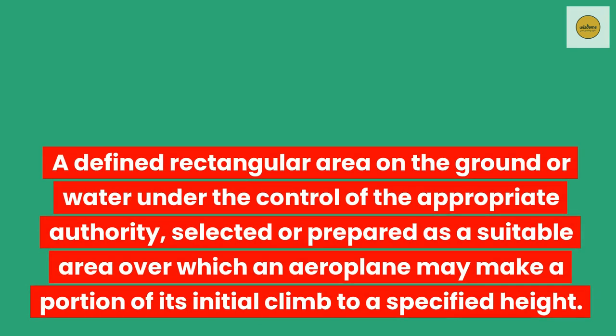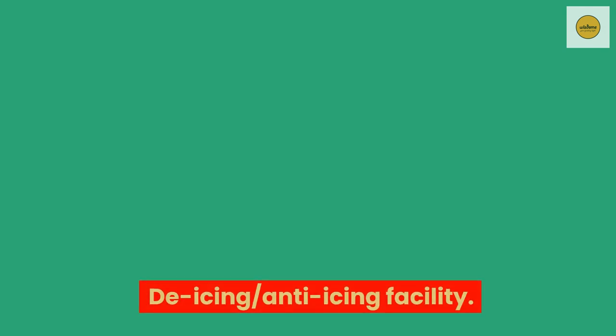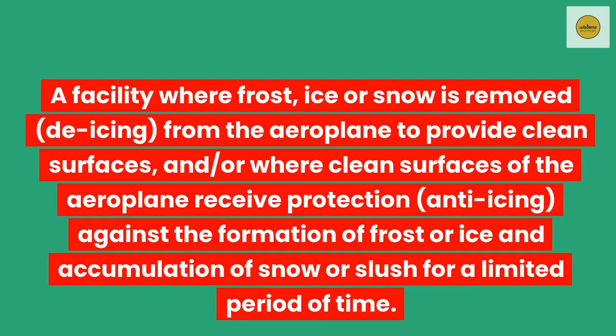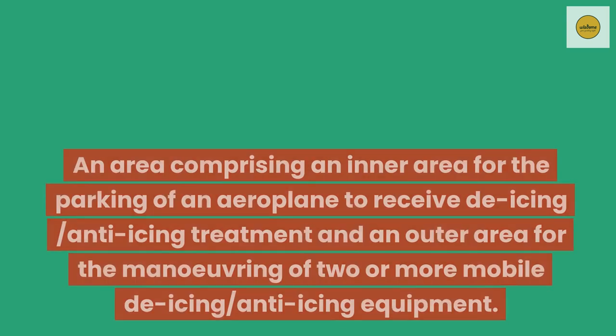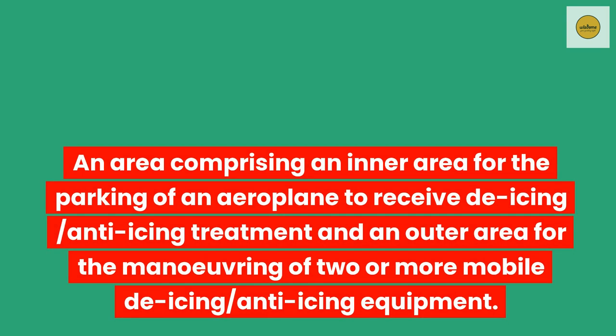Clearway. A defined rectangular area on the ground or water under the control of the appropriate authority, selected or prepared as a suitable area over which an aeroplane may make a portion of its initial climb to a specified height. De-icing/anti-icing facility. A facility where frost, ice or snow is removed from the aeroplane to provide clean surfaces, and/or where clean surfaces of the aeroplane receive protection against the formation of frost or ice and accumulation of snow or slush for a limited period of time. De-icing/anti-icing pad. An area comprising an inner area for the parking of an aeroplane to receive de-icing/anti-icing treatment and an outer area for the maneuvering of two or more mobile de-icing/anti-icing equipment.